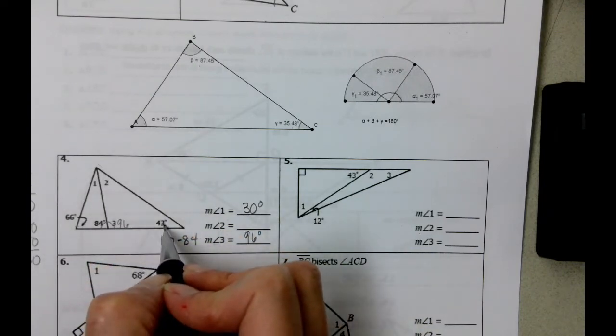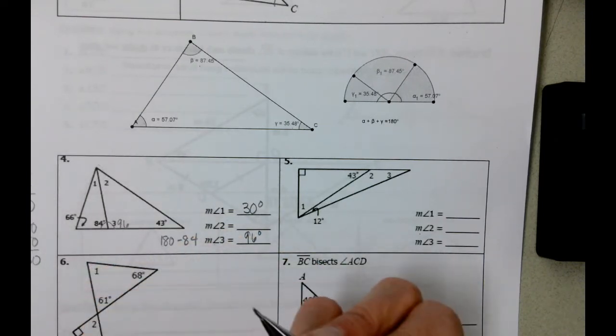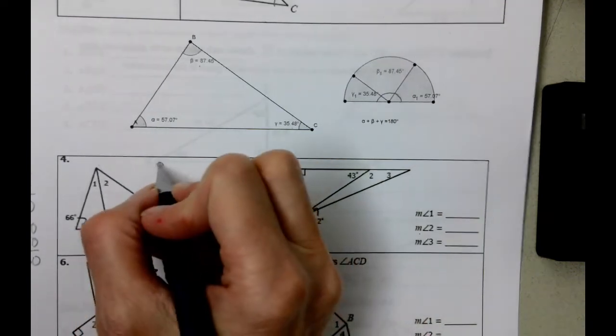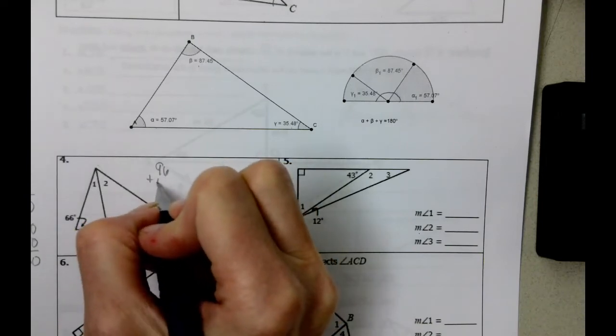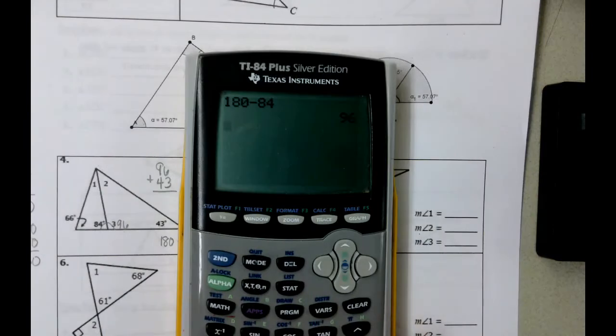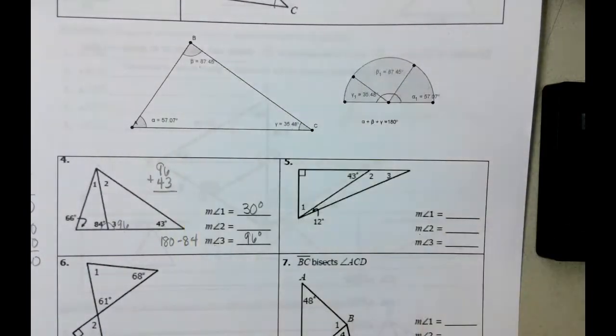We also know that this angle is 43. A triangle has 180 degrees in it, when we add the 96, plus the 43. Well, 96 plus 43, I don't really need a calculator, but here it is, is 139.